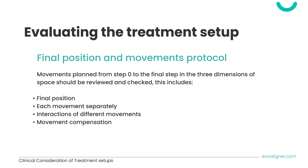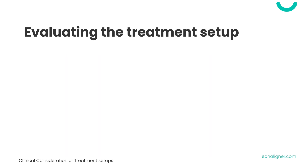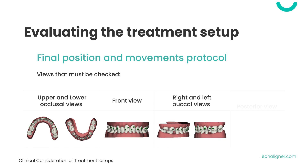The final position needs to be evaluated carefully from the beginning to make sure treatment goals are met and the final result is aesthetically and functionally acceptable. Next, we check how those final results were achieved by evaluating each movement separately, interactions of different movements, and any expected movement compensation. The views that need to be checked are the upper and lower occlusal views, the front view, right and left buccal views, and the posterior view. Always follow this systematic approach to ensure no detail is missed.